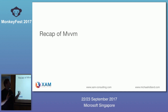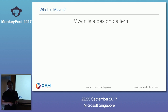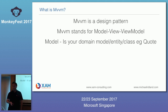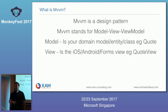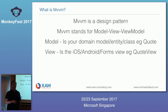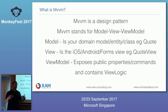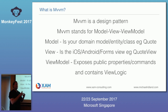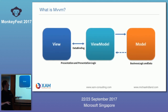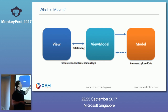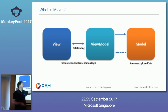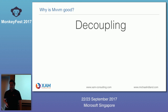A recap of MVVM: it's a design pattern that stands for Model-View-ViewModel. The Model is your domain — in a quoting app it would be your quote; in a CRM it would be your contact. It's your data model. The View is the UI layer — in Xamarin Forms it's a XAML page, in iOS it's a native view, on web it's HTML. The ViewModel contains the view logic and view data specific to that view — not business logic but view logic. We have two-way data binding between the view and the view model, with presentation logic in the view model and business logic in the model.